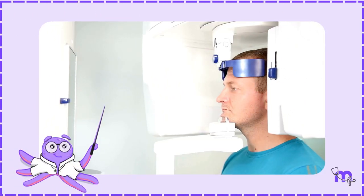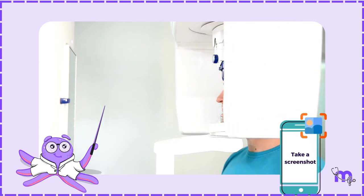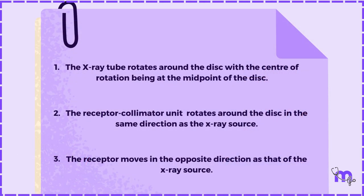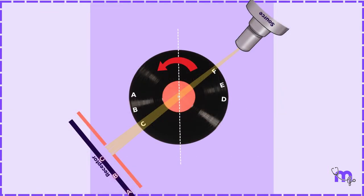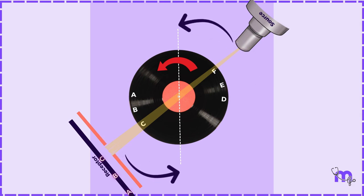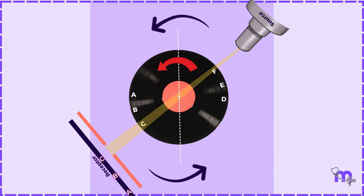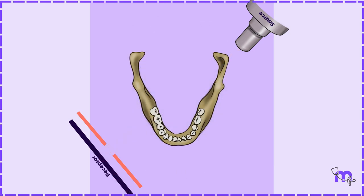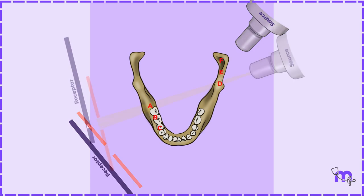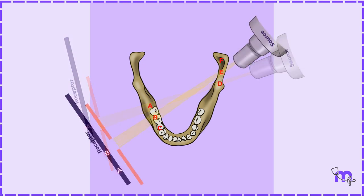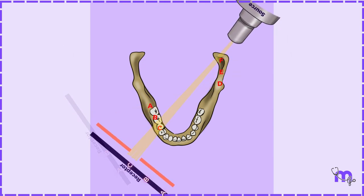Let us review the moving components of the machines. Feel free to take a screenshot. As the X-ray source and receptor-collimator unit rotate around the disc, it captures the side opposite to the source. Now imagine the mandible in place of the disc, and points A, B, C, D, E, and F representing specific locations on it. Applying the same principle, this rotational movement helps us capture the desired image.